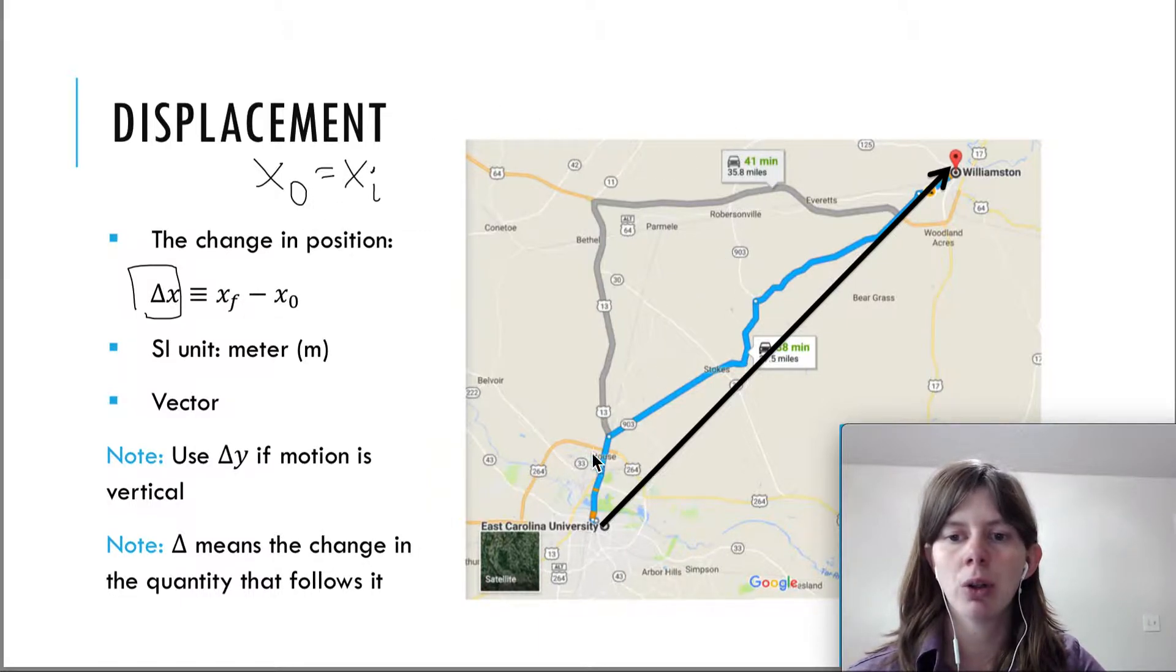So in this case, when you're going from ECU to Williamston, then the displacement would be represented by this arrow. It's just the distance between the two positions, the straight line, quickest, fastest distance.